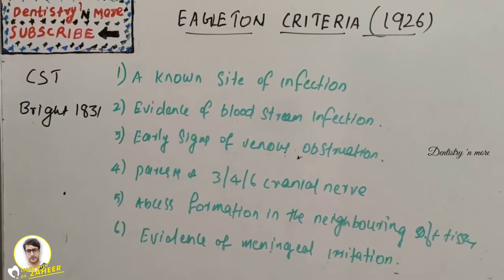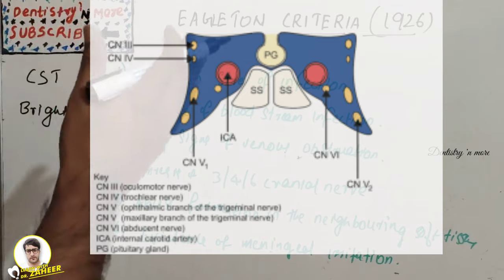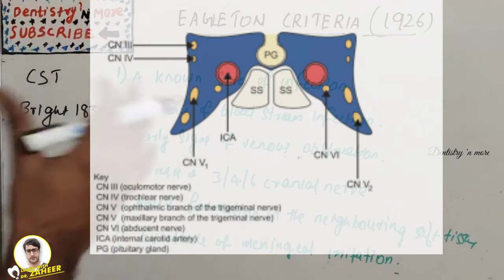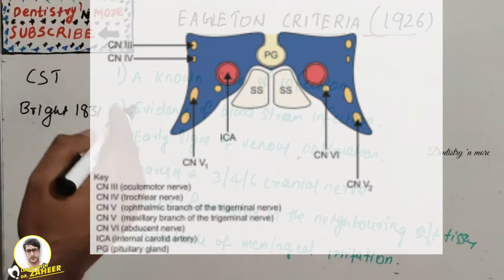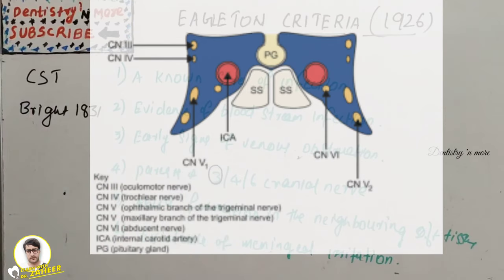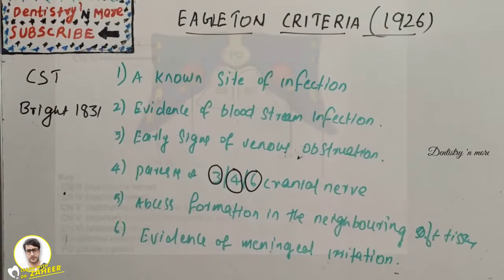Before that, we need to understand a little about the cavernous sinus. The cavernous sinus is a dural venous sinus situated lateral to the sella turcica, between two layers of cranial dura in the middle cranial fossa. Structures present within the cavernous sinus include the third, fourth, and sixth cranial nerves, as well as the fifth cranial nerve and internal carotid artery with its surrounding sympathetic plexus.